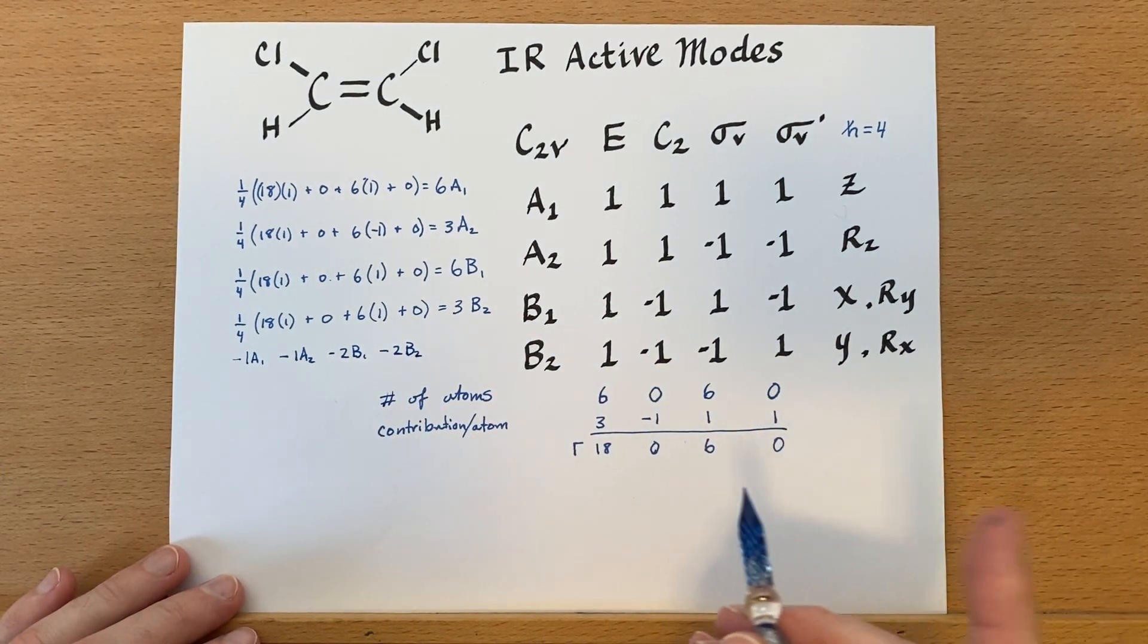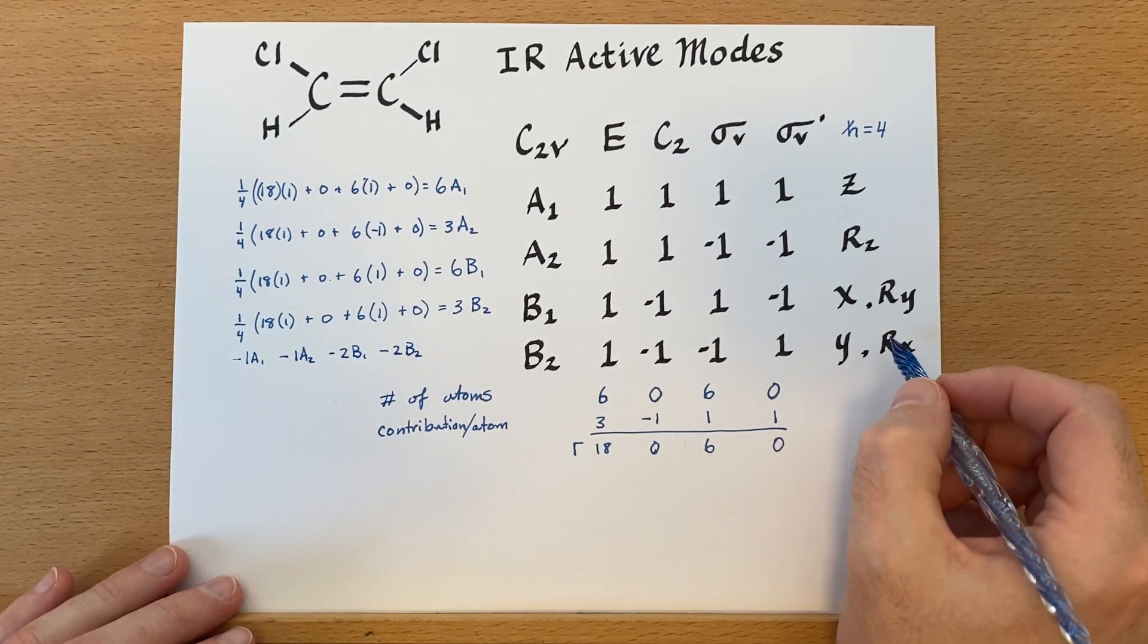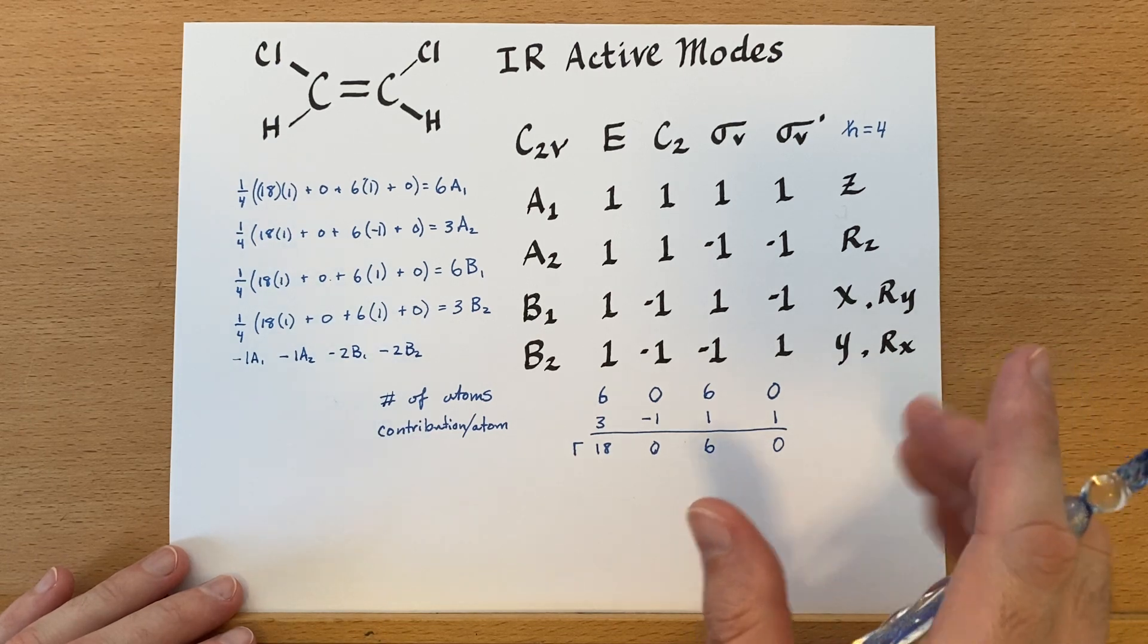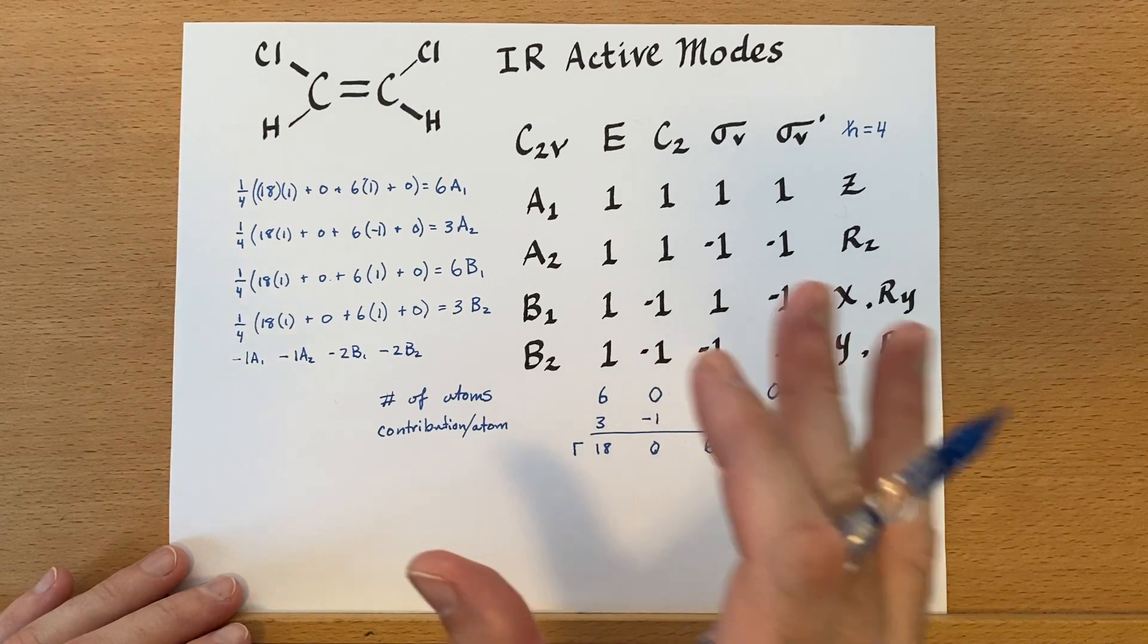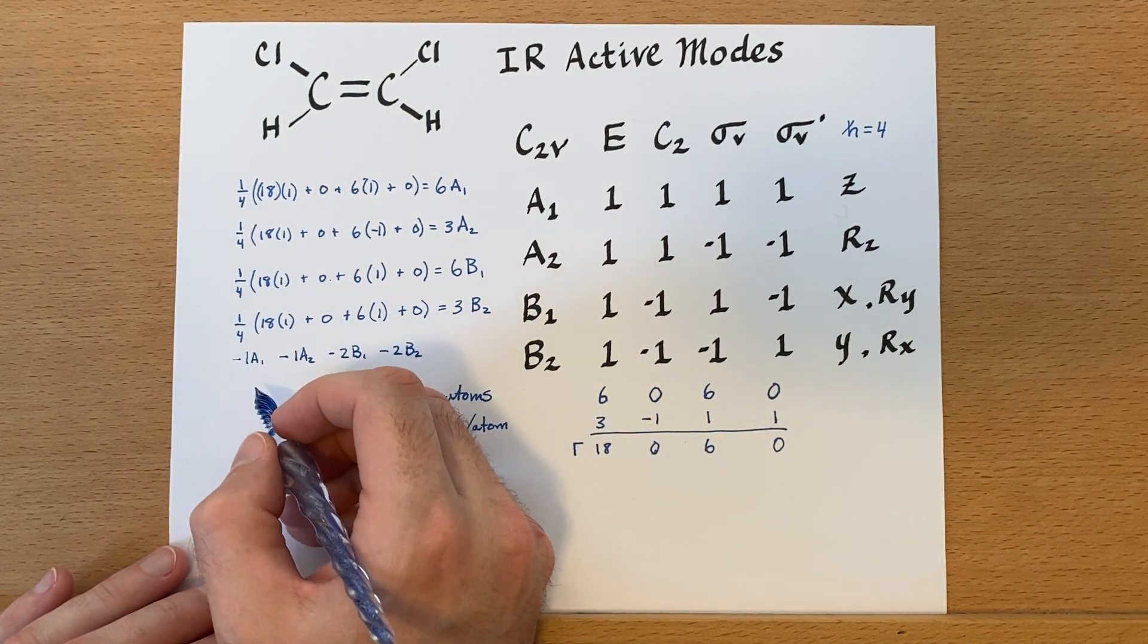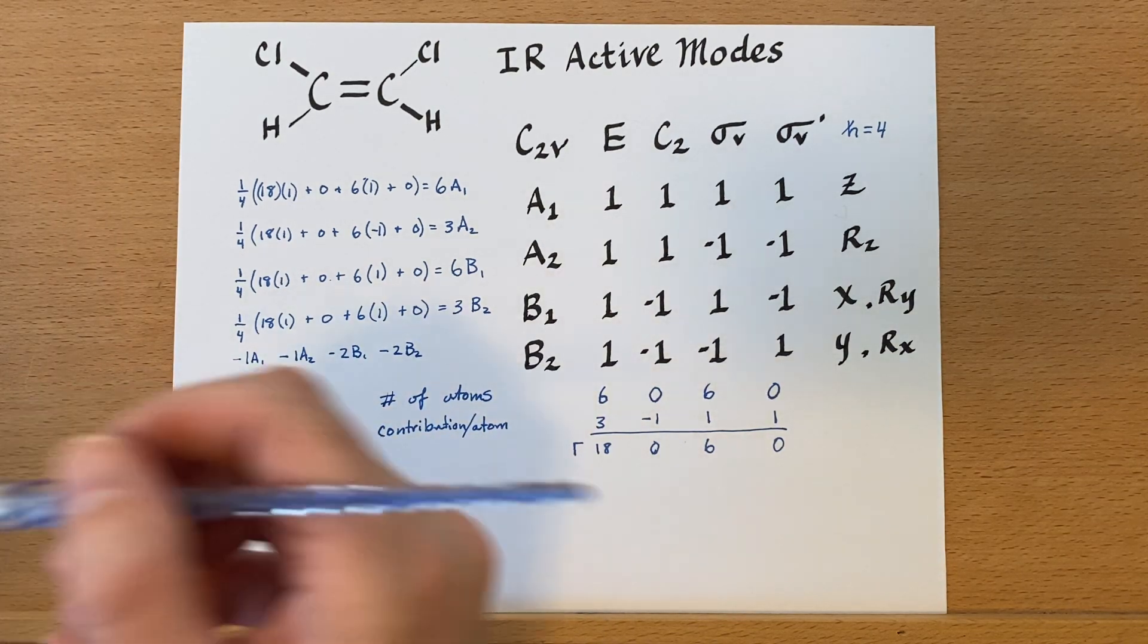Now, there is an exception to this. If both of these were in a parenthesis, then they would transform together, and that would be only counted as one in that case. That happens in the threefold rotational symmetry groups, for example. And I already have a video on ammonia.